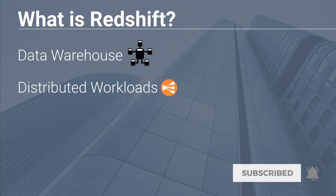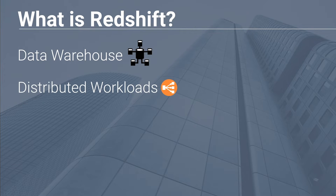Redshift natively supports distributed workloads and incorporates a feature called parameter groups. If you have many different users using this Redshift cluster — say your analytics team, your BI team, and your developers — you can configure your cluster so that certain groups have higher priority when performing queries or have more access to query slots compared to other groups.